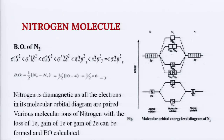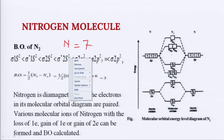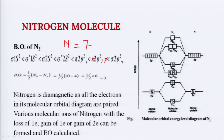Similarly, let us have a look at nitrogen. One nitrogen atom has 7 electrons in its atomic orbitals. So the nitrogen molecule N2 has a total of 14 electrons. Distributing the 14 electrons: sigma 1s², sigma star 1s², sigma 2s², sigma star 2s², pi 2Px², pi 2Py², and finally sigma 2Pz². Calculating the bond order: number of bonding electrons minus number of anti-bonding electrons divided by 2 gives 3. So the bond order of nitrogen is 3.